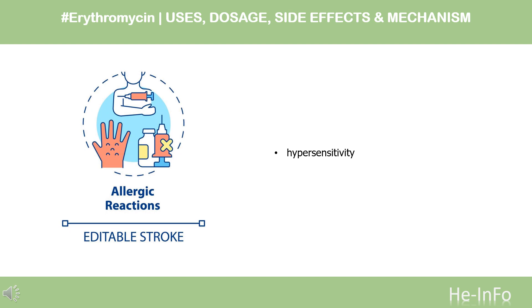Contraindications: Erythromycin is contraindicated in patients with known hypersensitivity to this antibiotic. Erythromycin is also contraindicated in patients taking terfenadine, astemizole, cisapride, pimozide, ergotamine, or dihydroergotamine. See Precautions — Drug Interactions.